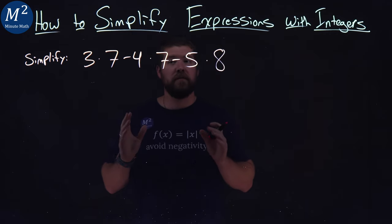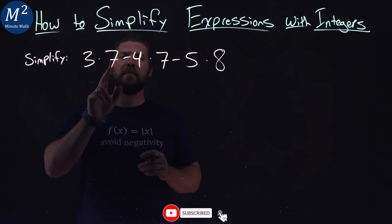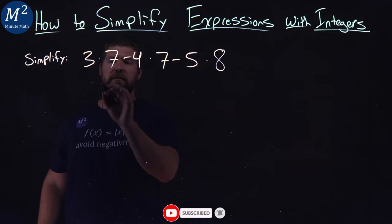So we have to deal with the multiplication first, and this is where students will make a mistake. 3 times 7 comes first, that's a 21.